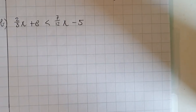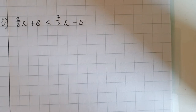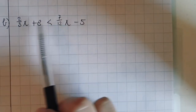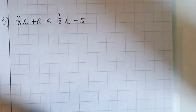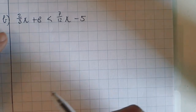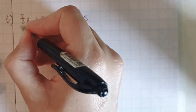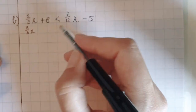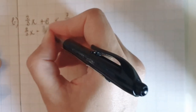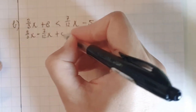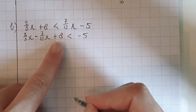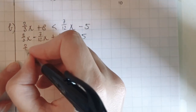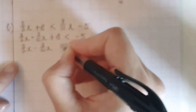And b: 2 third x plus 8 is smaller than 7 twelfth x minus 5. I see fractions here — it doesn't need to bother you, you just have to take it slow. First, minus 7 twelfth x on this side, minus 7 twelfth x on that side. Here's a trick: you just copy the 2 third x and write down behind it minus 7 twelfth x. And then plus 8. First, I'm going to do minus 8 on this side, minus 8 on that side. Minus 8 here becomes minus 13.